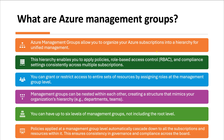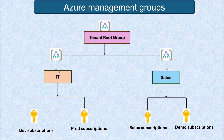With the help of management groups, it is very easy to organize roles, policies, and compliance for your organization. This hierarchy enables you to apply policies, access control, and compliance settings consistently across multiple subscriptions. For example, if a user belongs to both IT and Sales departments, you can directly provide access at the Tenant Root Group level, and that user will automatically have access to all subscriptions under the Tenant Root Group.